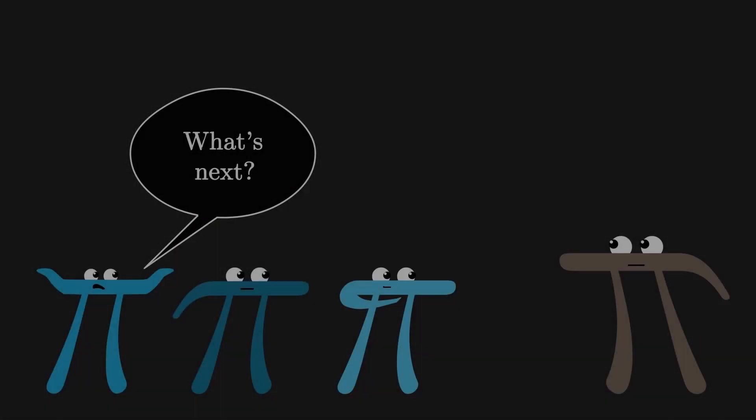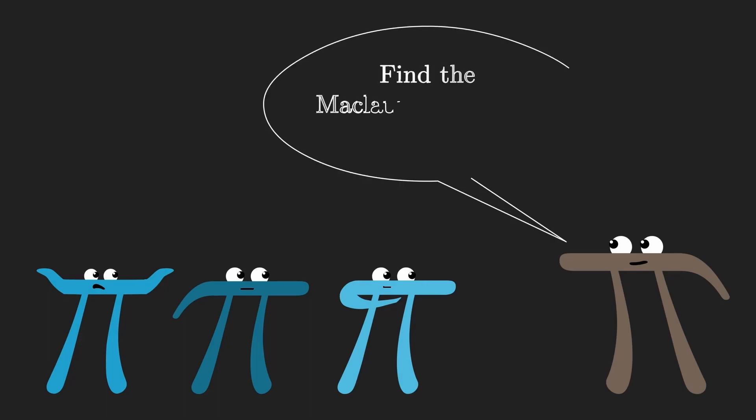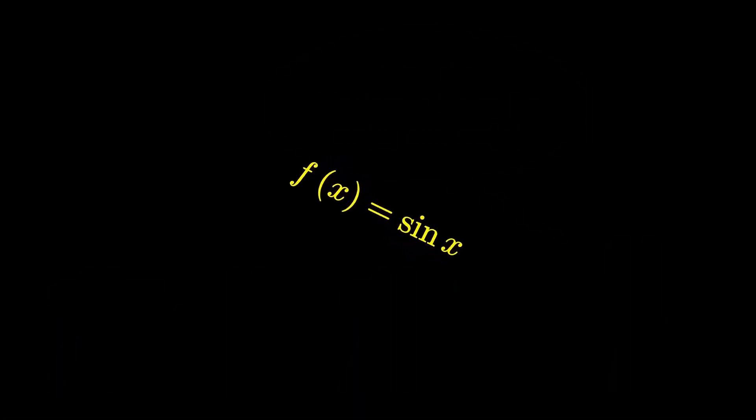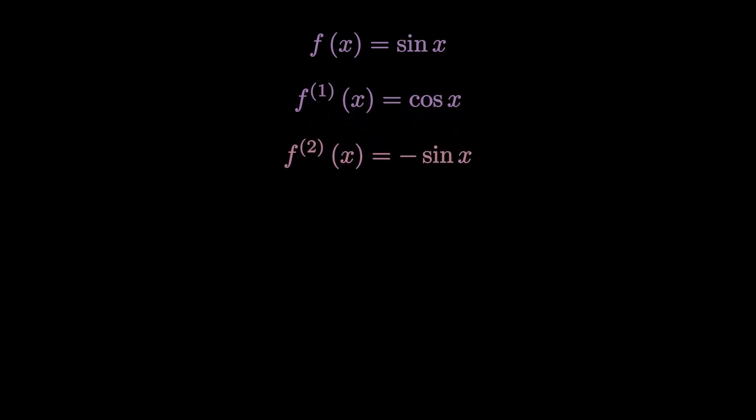So you may be wondering, what's next? Well, we must find the Maclaurin series for sin x and cos x. So let's start with f(x) = sin x. As always, let's differentiate this. The first derivative equals cos x. The second derivative. The third derivative. And for the sake of understanding, let's go twice more and find the fifth derivative as well.